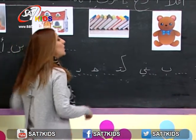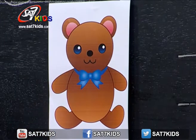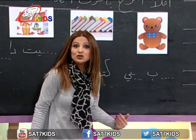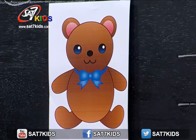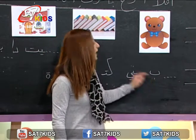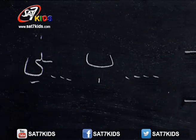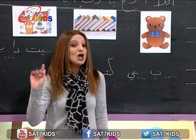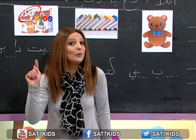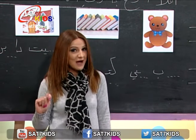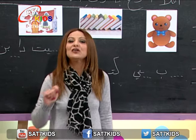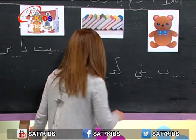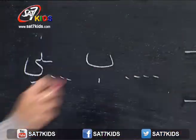لح نبلش بأول صورة. تنبهوا كتير منيحة للصورة. أكيد منعرف شو هيدا؟ هيدا صورة دب. وشو لونه هيدا الدب؟ بني، صح لونه بني. طيب، منتطلع بالكلمات تحت. في عنا أول حرف بكلمة دب ناقص. شو منسمع بأول كلمة دب؟ حرف الدال، وهيك منكتب حرف الدال.